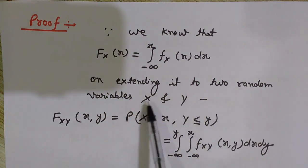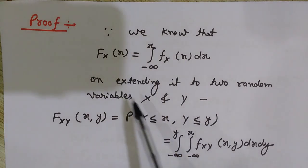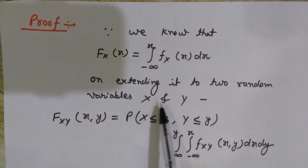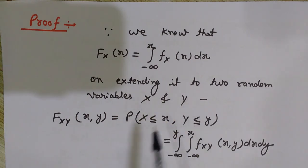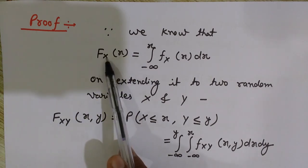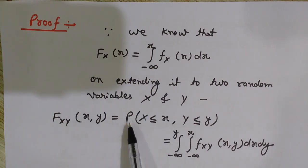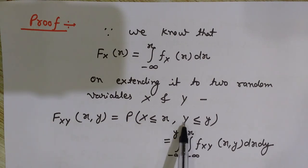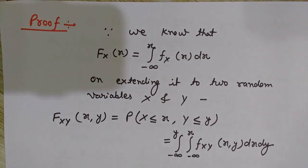Now we extend this to two random variables x and y. For a single random variable x we had F(x); now extending it to two random variables x and y, it can be written as F(x, y), which equals the probability that random variable X is less than x and random variable Y is less than y. This is the standard form of the joint cumulative distribution function by definition.